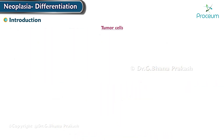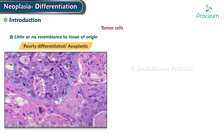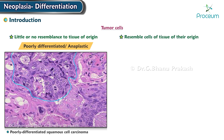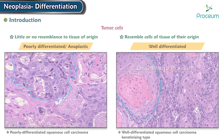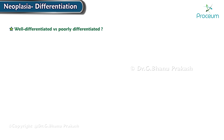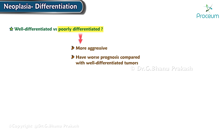If tumor cells bear little or no resemblance to the tissue of origin, the tumor is said to be poorly differentiated or anaplastic. When tumor cells resemble the cells of the tissue of their origin, it is said to be well differentiated. In general, poorly differentiated tumors are more aggressive and have a worse prognosis compared with well differentiated tumors.